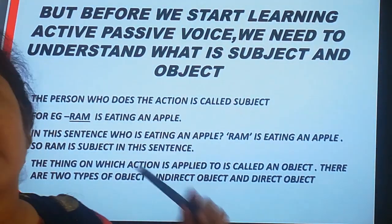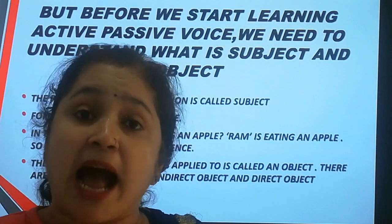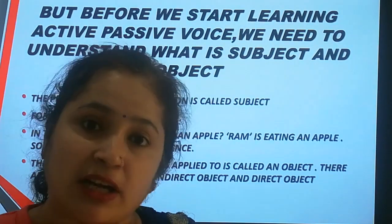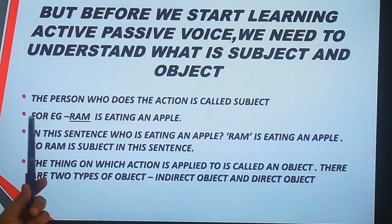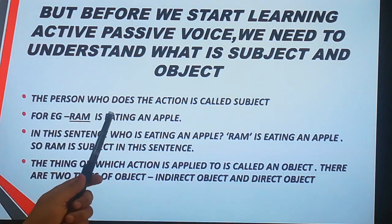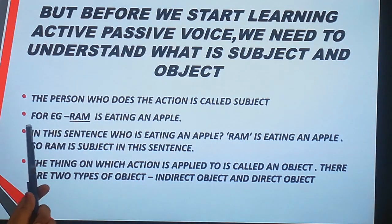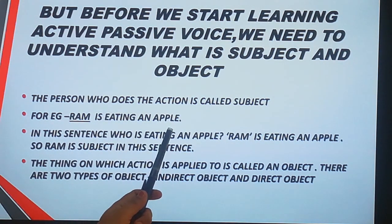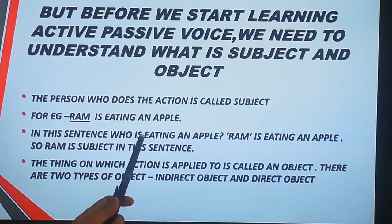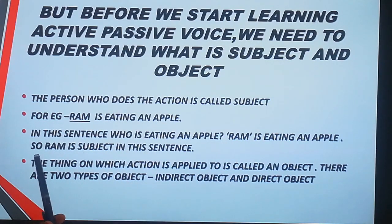But before we start learning active and passive voice, I would like to give you some basic knowledge about subject and an object. The person who does the action is called subject. For example, Ram is eating an apple. In the sentence, who is eating an apple? Ram. So Ram is the subject in this sentence.